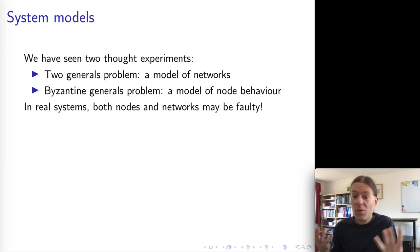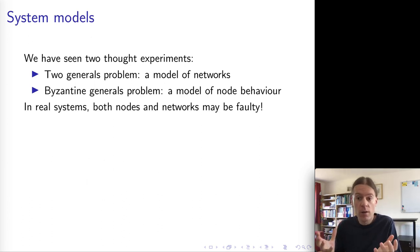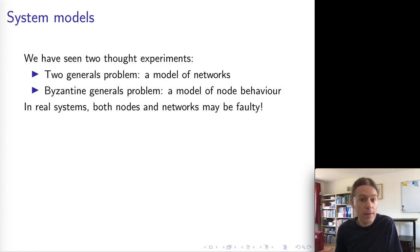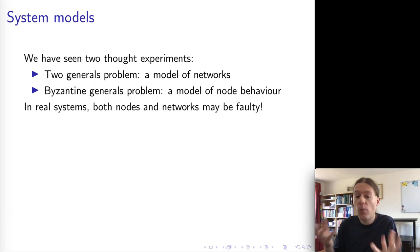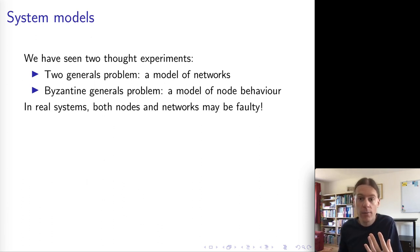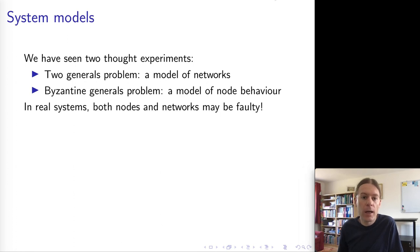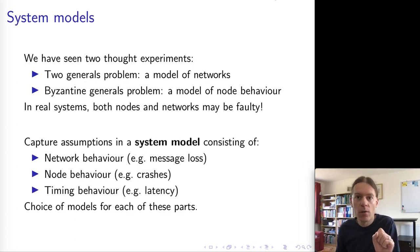So now we should put the two together and try to design system models for systems in which both nodes and networks might go wrong in various ways. This is really the foundation of any algorithms in distributed systems. We need to assume certain things about what properties the system is going to have, and typically we do that by looking at three different areas of interest.